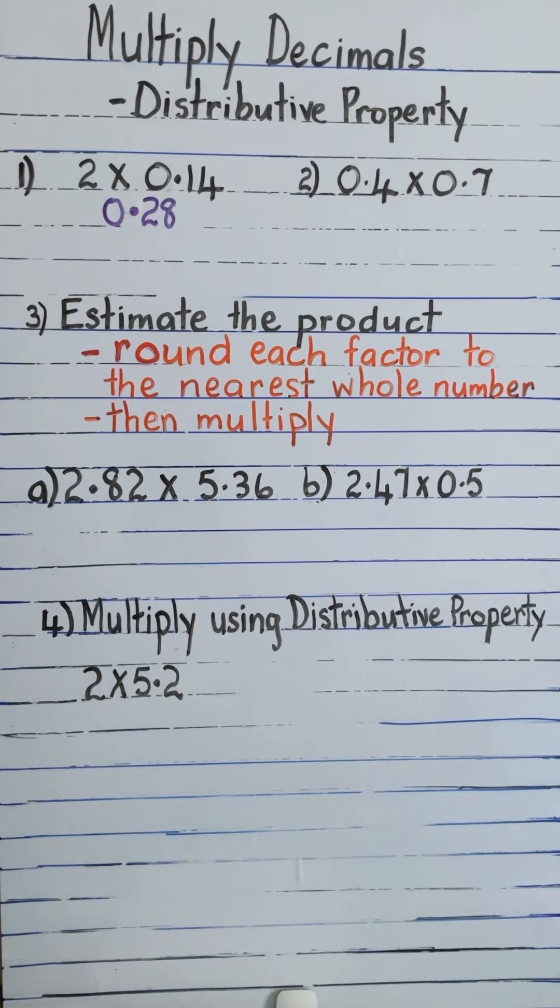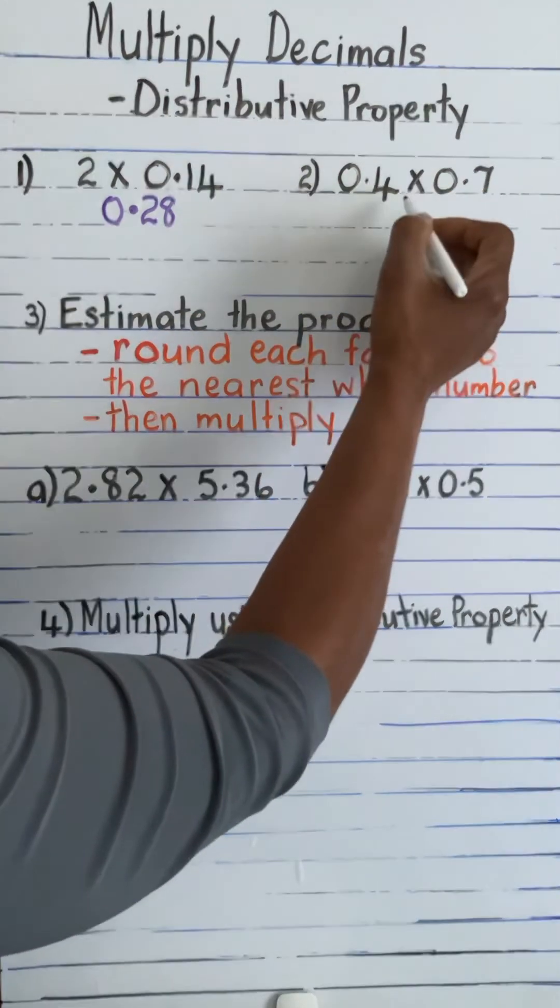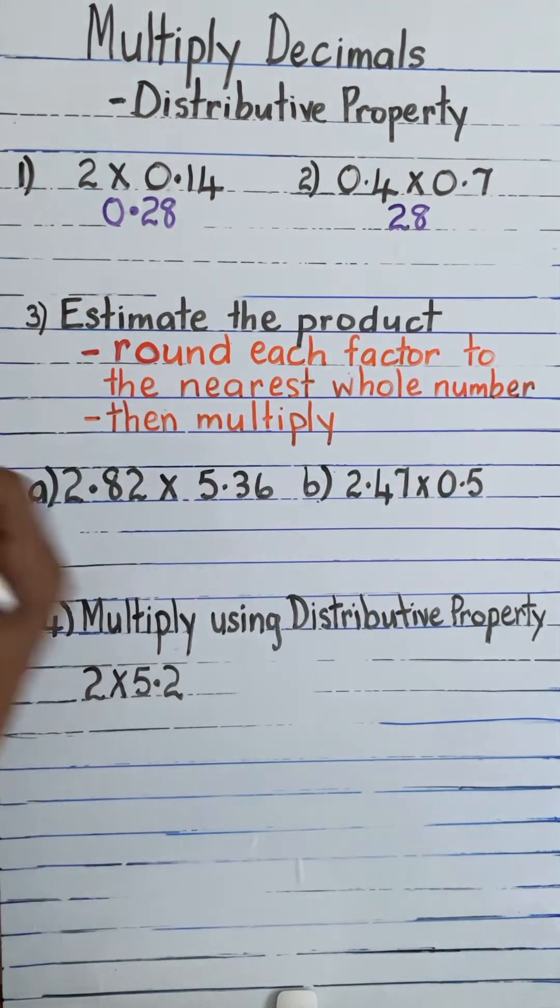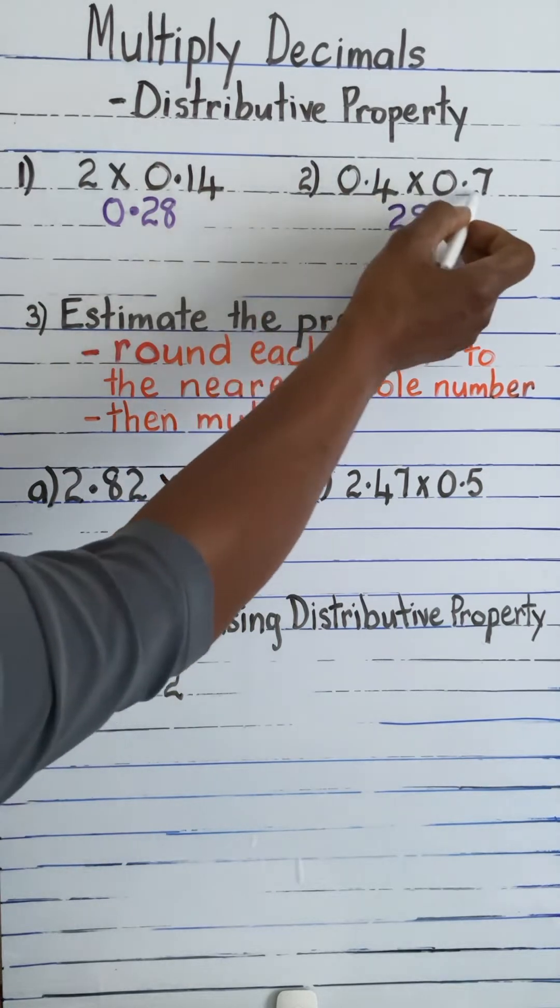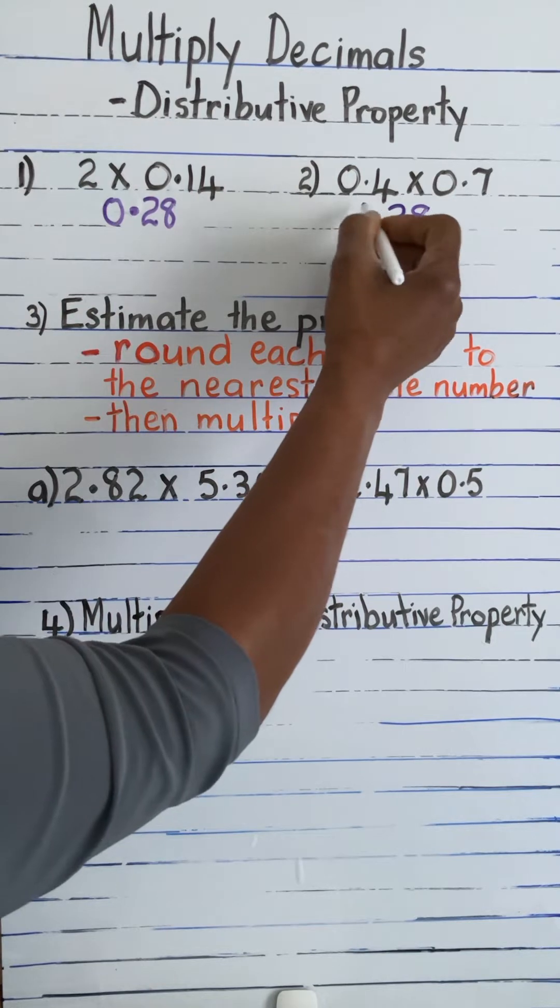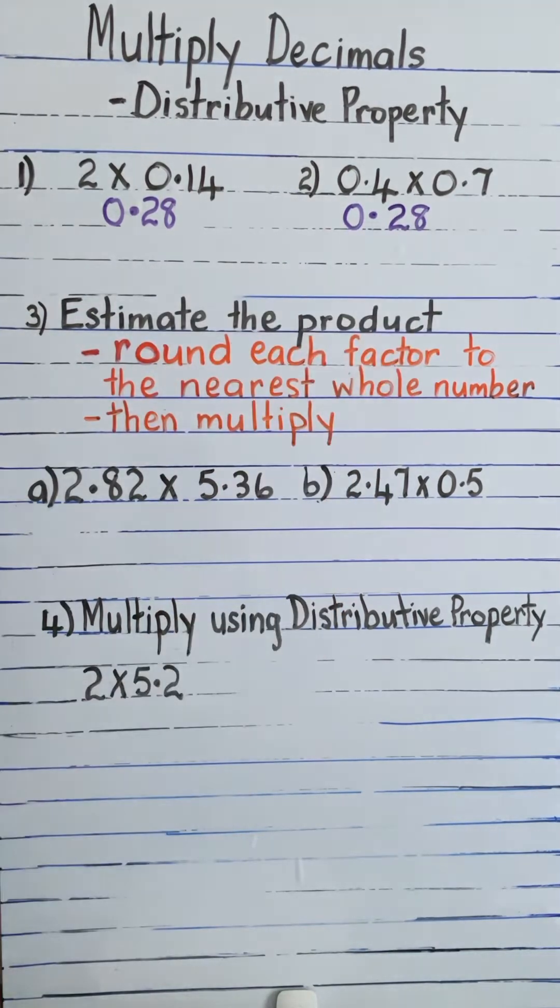Next we have a decimal times a decimal: 0.4 times 0.7. So we'll just multiply the numbers, 7 times 4 is 28. Then we are going to count how many decimal places we have—one place here and one place here—so we end up with two decimal places: 0.28.